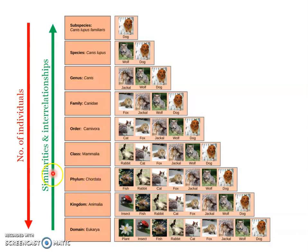Similarly, 'Phylum Caudata' is a taxon, but 'phylum' alone is a category. 'Kingdom Plantae' is another taxon, while 'kingdom' is the common category.